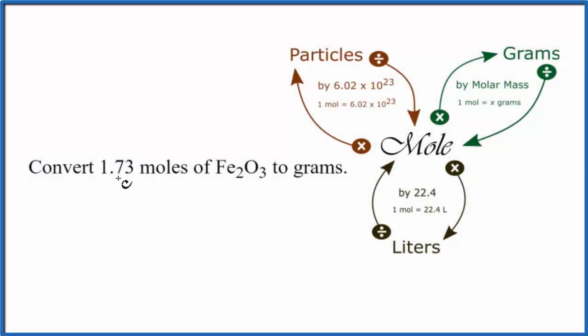In this video, we'll convert 1.73 moles of Fe2O3 to grams. This is a typical problem you might see. So we have 1.73 moles of Fe2O3. We can abbreviate that mol. We want to get it to grams.